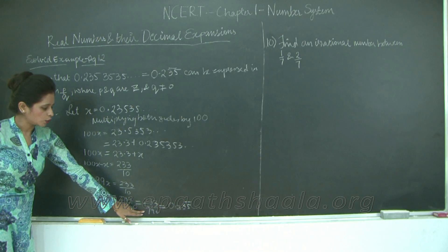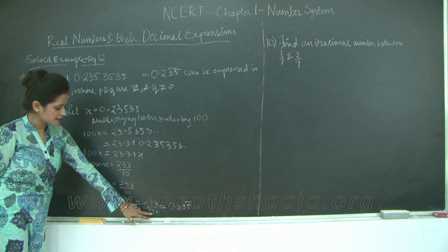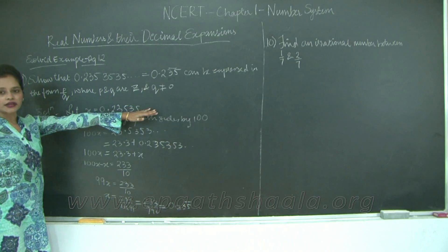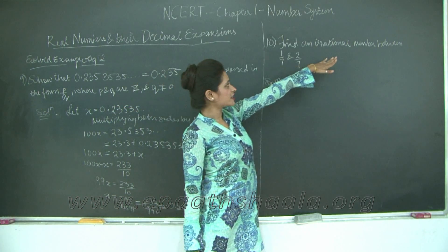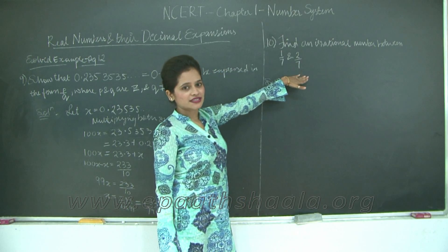Take a look: P upon Q, where both these numbers are integers and 990 is not equal to 0, that is, q is not equal to 0. So let us look at the second example.